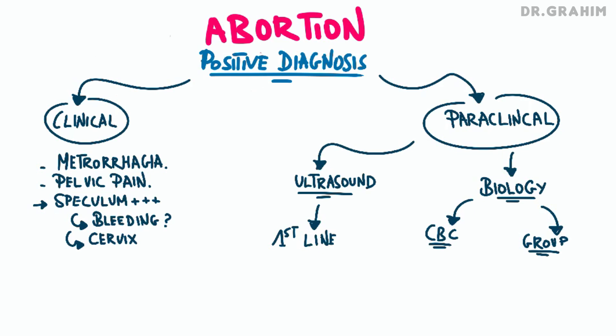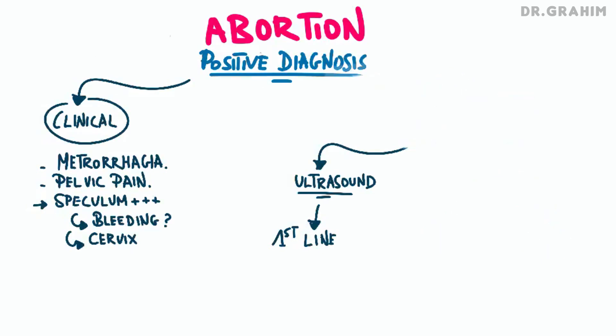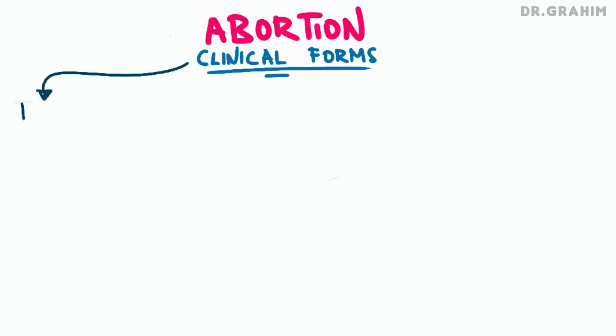The natural progression of an abortion can be divided into five distinct clinical forms, each presenting specific characteristics based on the stage of the abortion and the clinical signs observed.